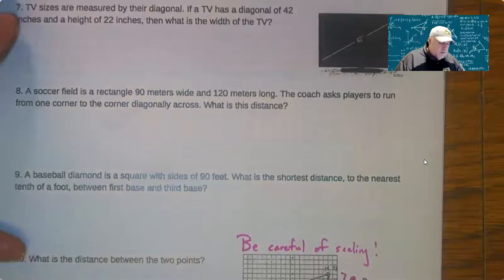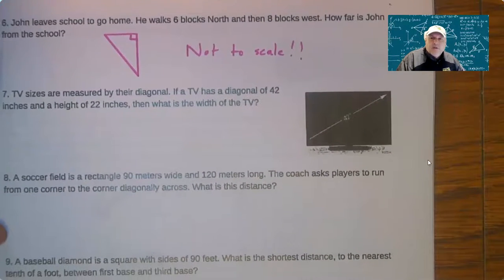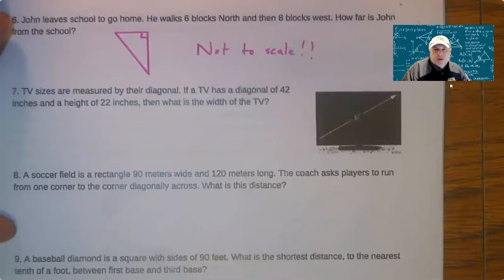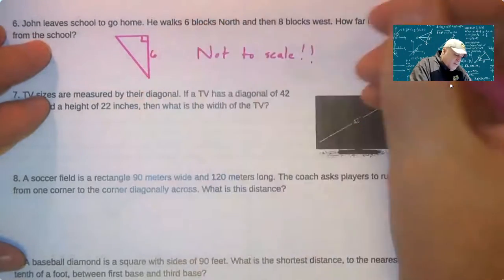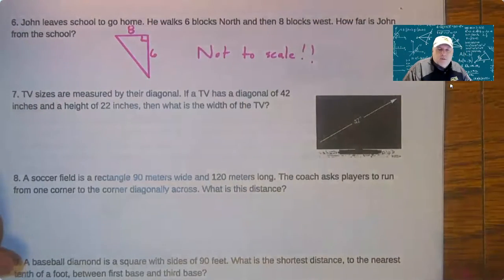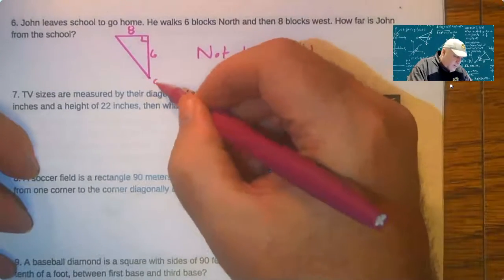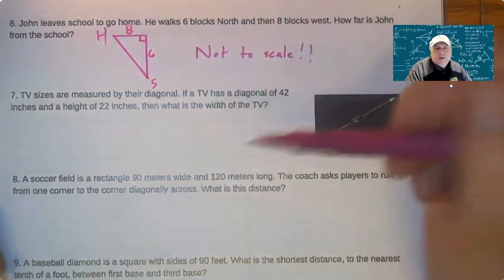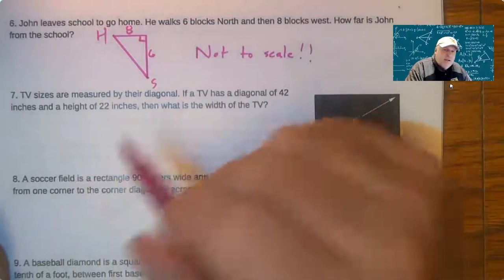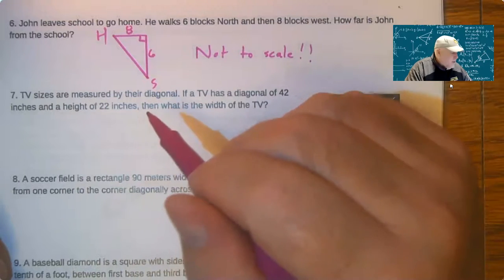Problems on this page are getting a little bit more involved. You do need to realize that this is a right triangle. Draw a right triangle. Draw a right triangle. And then try to make it as realistic. So John leaves school to go home. So school is right here. Home is here. He walks six blocks north and then eight west. Of course, on my template, this is not to scale. That doesn't matter. You just need a drawing.